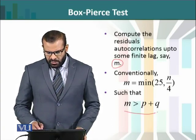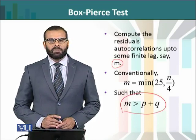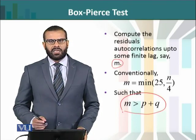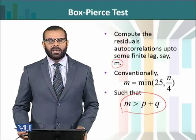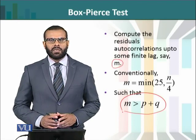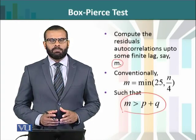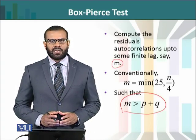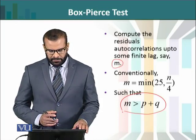ایک important condition اس test میں یہ ہے کہ m must be greater than p plus q، جبکہ p plus q is the number of parameters in the fitted model۔ کیونکہ ہم نے ایک ARMA(p,q) model fit کیا ہے، اس کا مطلب ہے model کے اندر total p plus q parameters ہوں گے۔ تو portmanteau test use کرنے کے لیے جب ہم m کو select کریں گے تو m، p plus q سے بڑا نمبر ہونا چاہیے۔